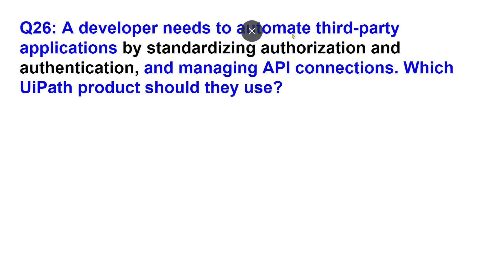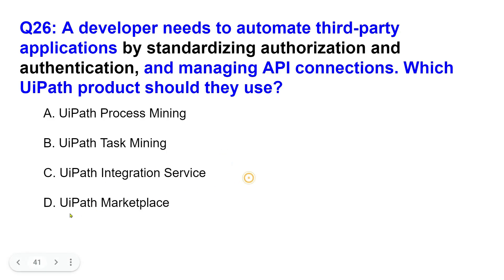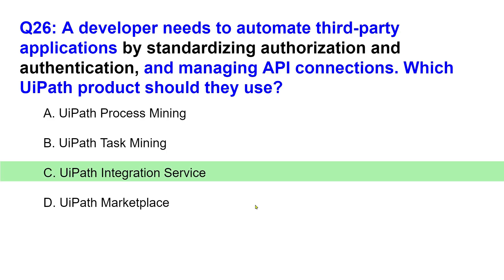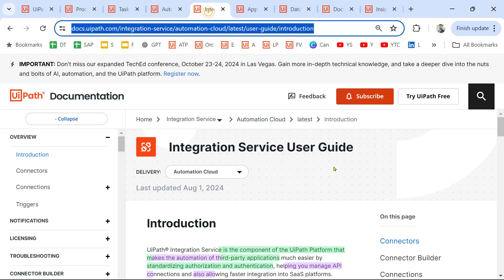Next question: a developer needs to automate third-party applications by standardizing authorization and authentication, and managing API connections. These are the keywords. Which UiPath product should they use? Your options are: UiPath Process Mining, UiPath Task Mining, UiPath Integration Service, or UiPath Marketplace. Comment your answer.